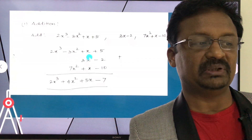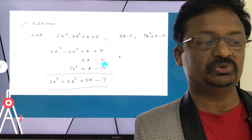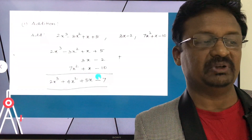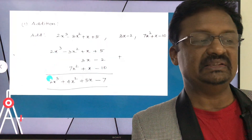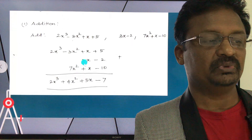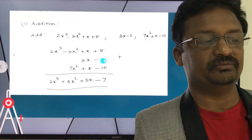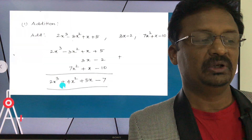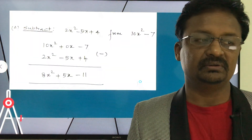Aligning like terms vertically: 2x³, then -3x² + 7x² = 4x², then 1x + 3x + 1x = 5x, and the constants 5 - 2 - 10 = -7. So the sum of the three polynomials is 2x³ + 4x² + 5x - 7.